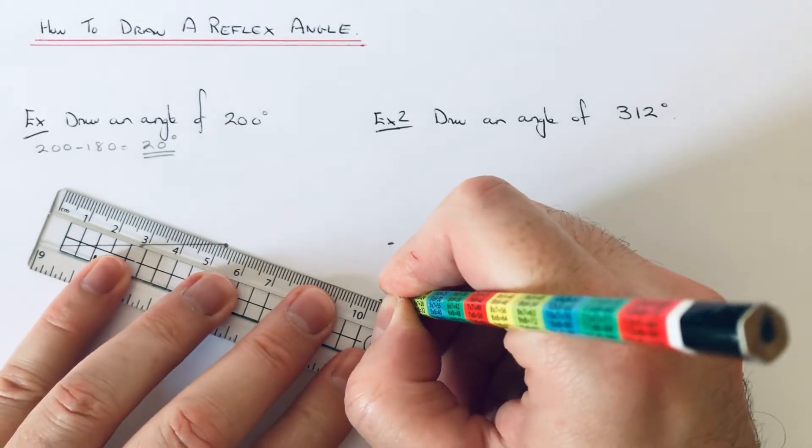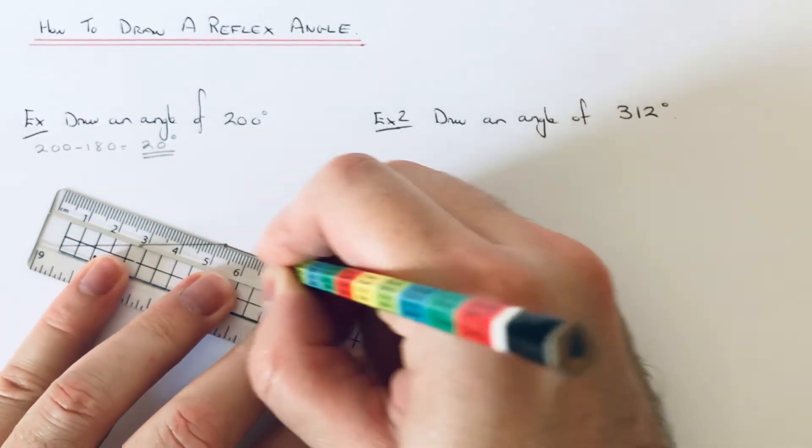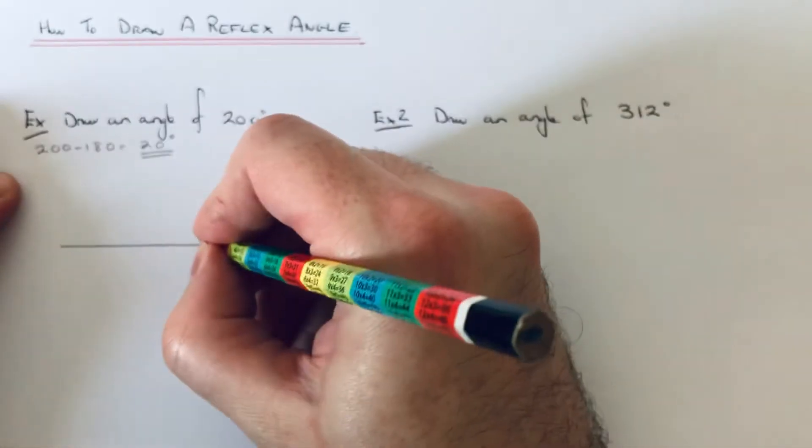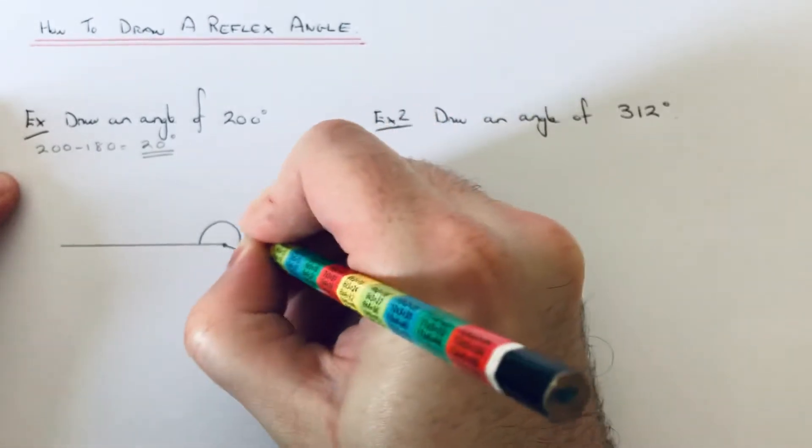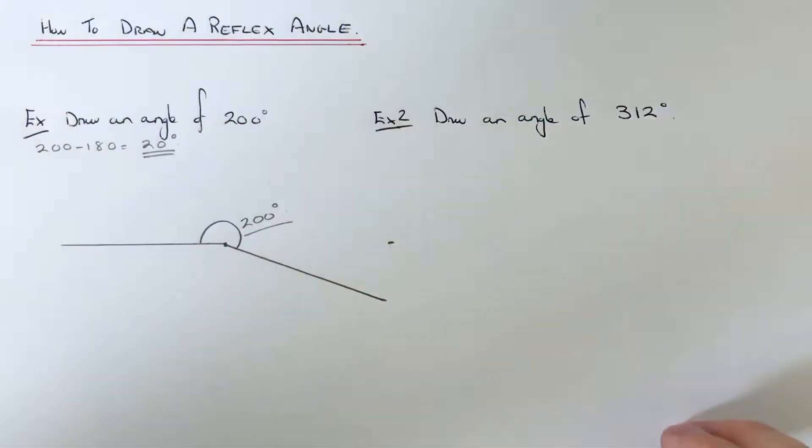Then we can use our ruler to draw a line back to the end of that line, so this angle here is 200 degrees. Let's have a look at the second example which is a little bit harder to do. This time we've got to draw an angle of 312 degrees.